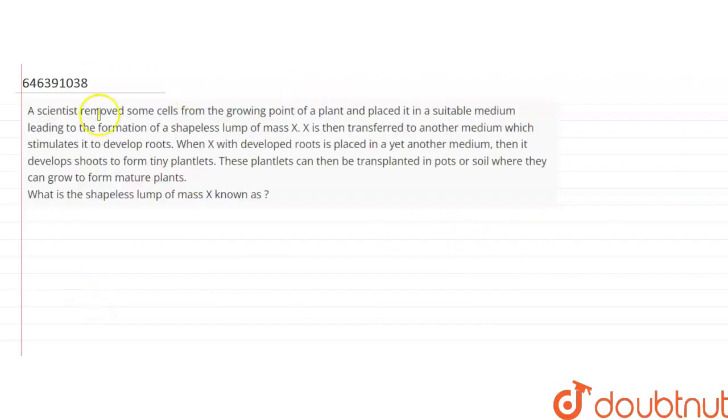Hello friends, question is asked. A scientist removes some cells from the growing point of a plant and places it in a suitable medium leading to the formation of a shapeless lump of mass X. X is then transferred to another medium which stimulates it to develop root.